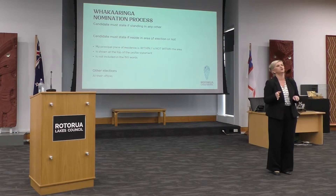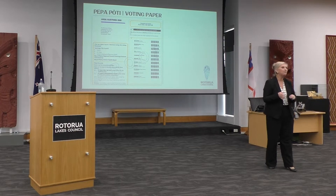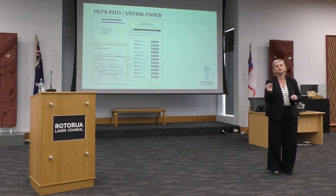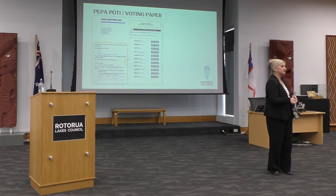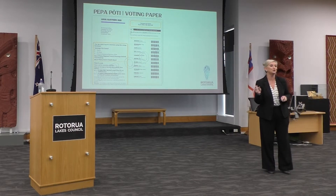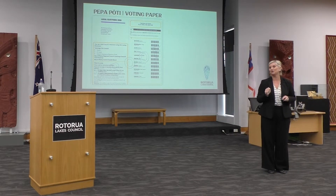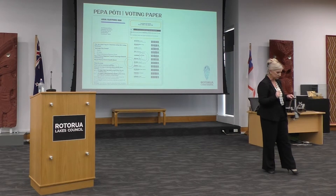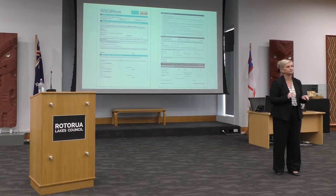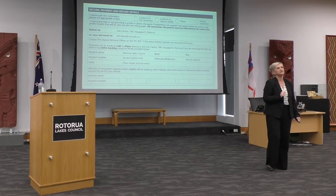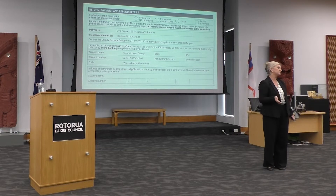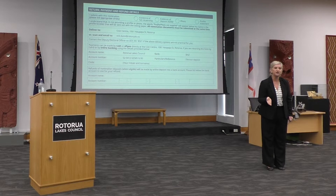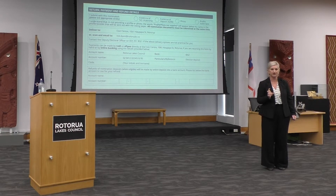Names on voting papers appear in random order, so if you're sitting down with friends and family, don't fill the paper in just once — every paper will be different. Be very careful to read your voting papers to make sure your tick goes against the candidate you wish to see representing you at council. Here are examples of what the nomination forms and returns forms look like. We collect a lot of information, and our electoral office team will be able to help you fill those in correctly.